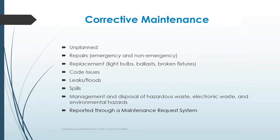There are also code issues that change over time, and we have regular inspections. All schools are inspected by the state fire marshal's office and they enforce codes; local fire marshals can also do inspections. Sometimes they will identify a code violation in the school, and that causes a corrective maintenance issue. You can also have things like leaks and floods, roof leaks, burst pipes, and spills. The management and disposal of hazardous waste, electronic waste, and environmental hazards can also be considered a corrective maintenance issue.